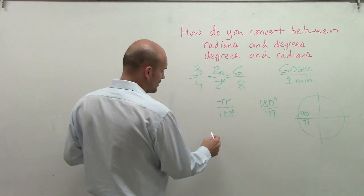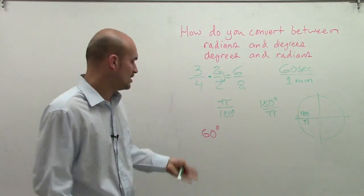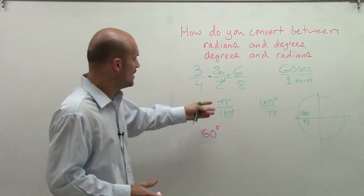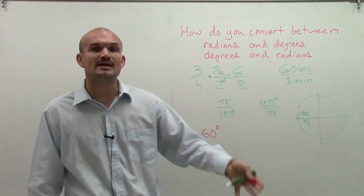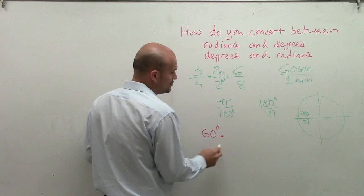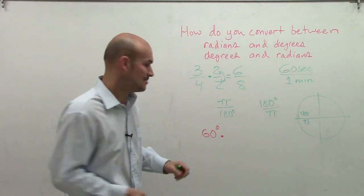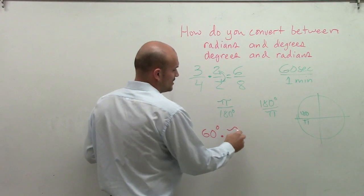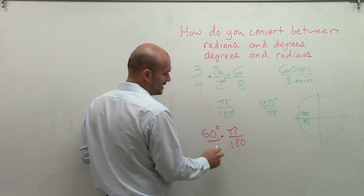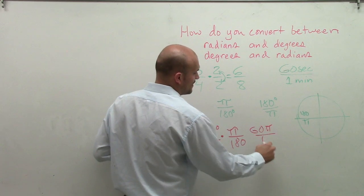How do we convert between radians and degrees and degrees to radians? Let's deal with an easy answer. Let's start with 60 degrees. How am I going to convert 60 degrees to radians? I'm going to multiply this by one of my ratios. I need to determine which ratio I'm going to multiply by. I'm going to choose the ratio that is going to allow me to divide out my units or cancel out my units. I'm going to choose π over 180. When I multiply 60 degrees by π over 180, we can write this as 60 degrees over 1. What I get is 60π divided by 180.